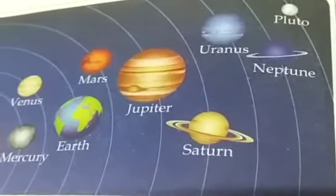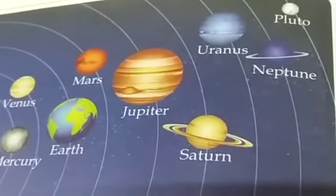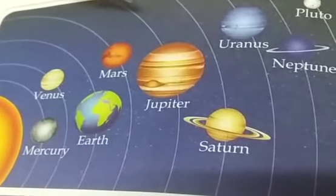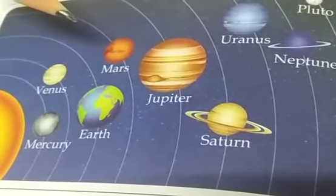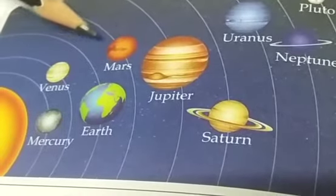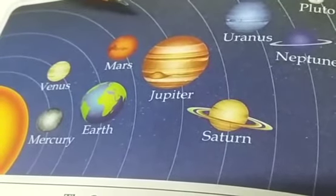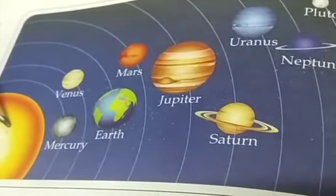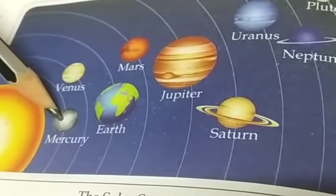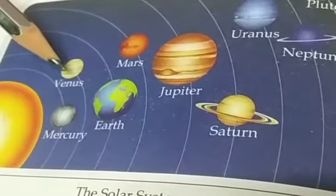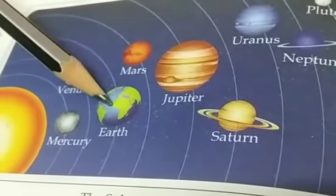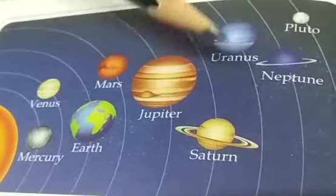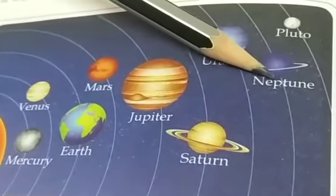The solar system consists of the sun and the eight planets, and all the moons which are revolving around the planets. The sun is in the middle. The first planet is Mercury, then Venus, Earth, Mars, Jupiter, Saturn, Uranus and Neptune.